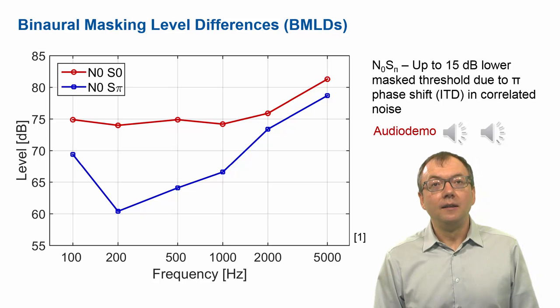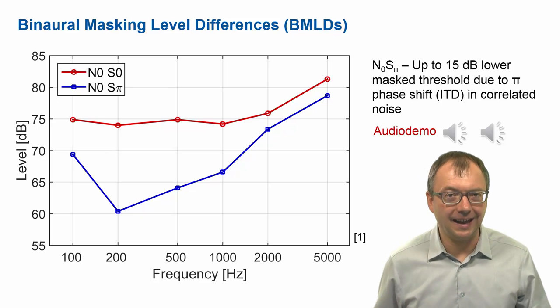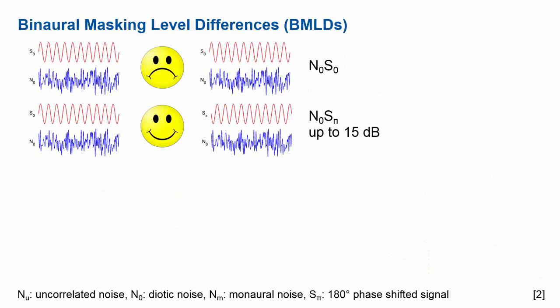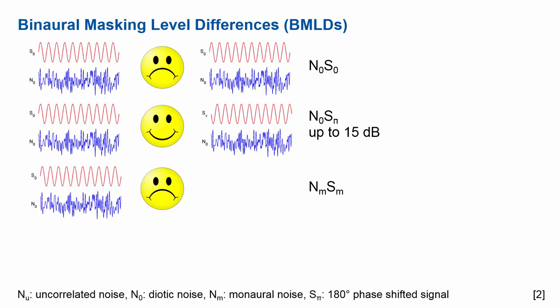The binaural masking level differences — BMLDs — can help us hear sounds in noise quite considerably. The N0S0 condition is the difficult one where there are no internal phase differences between signal and noise. If we introduce a π phase shift in the signal but keep the noise diotic, we gain up to 15 decibels. If we do the same thing monaurally, the interaural phase doesn't matter and thresholds are almost like those in the N0S0 condition.